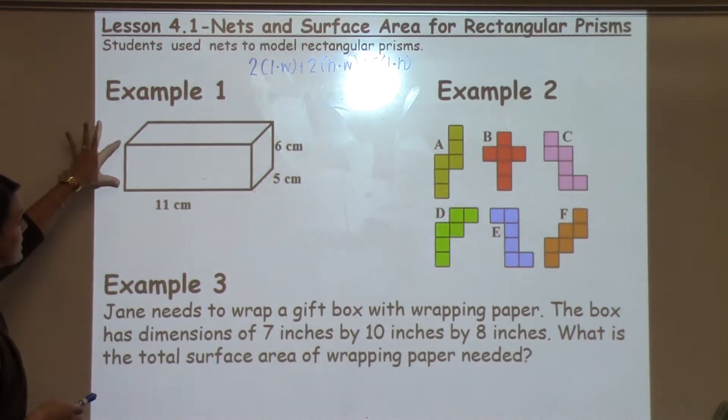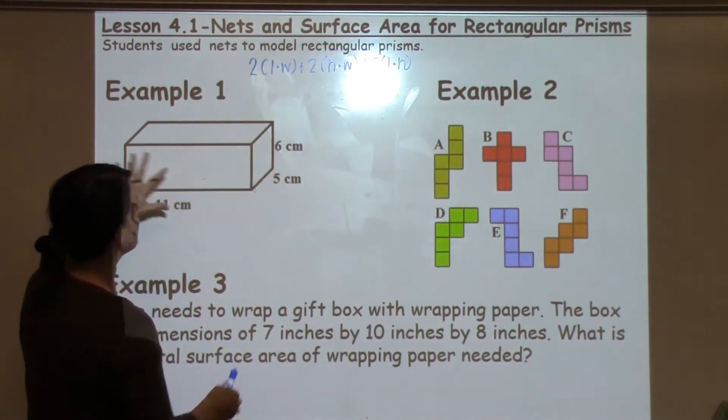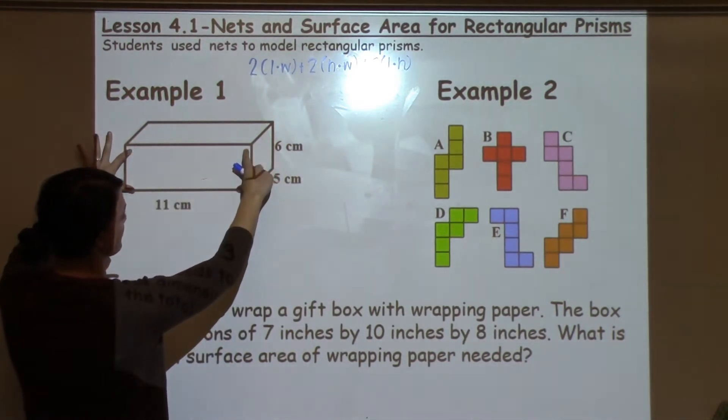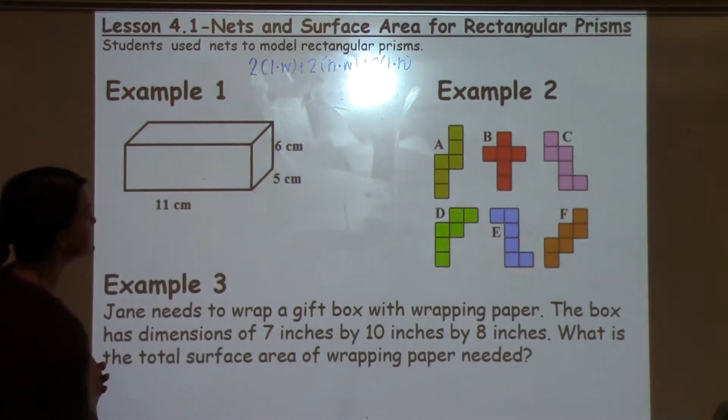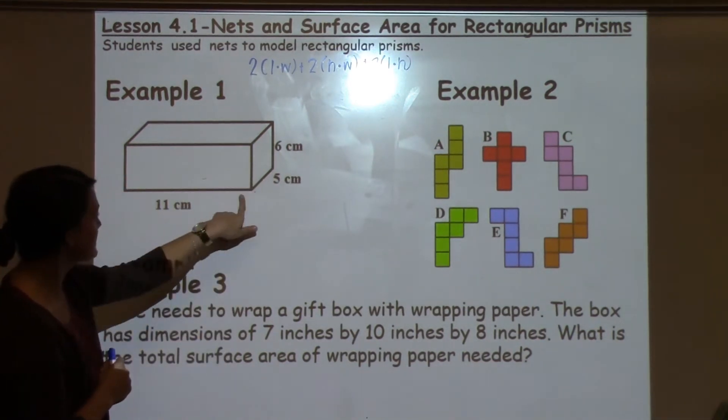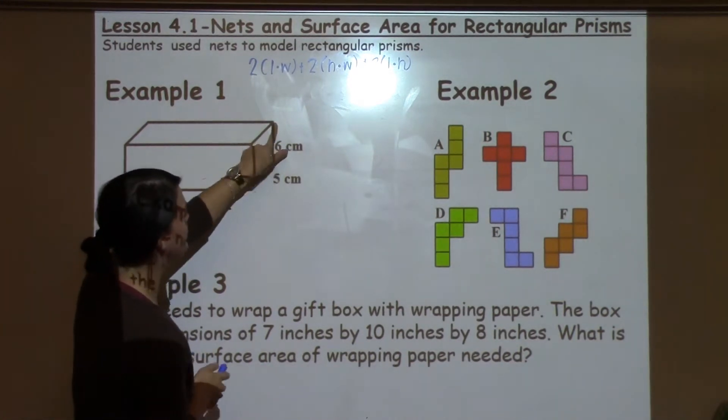So we're going to look at this first example. This is a rectangular prism because it's a 3D shape that has a rectangular face on some of the sides. So we have a length of 11, a width of 5, and a height of 6.